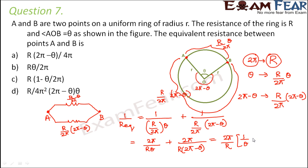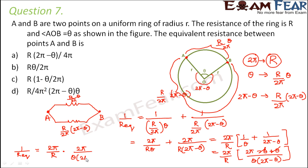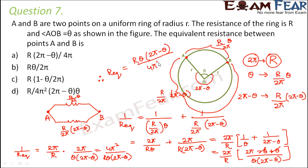This simplifies to 2π/R times (2π − θ + θ) divided by θ(2π − θ), which gives 1/R_eq = (2π/R) × (2π / θ(2π − θ)) = 4π² / Rθ(2π − θ). Therefore, R_eq = Rθ(2π − θ) / 4π². Looking at option D — R times θ(2π − θ) divided by 4π² — option D is the correct answer.